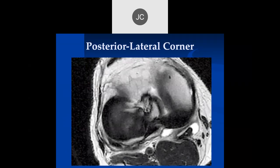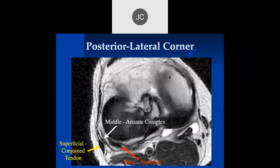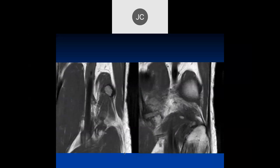Looking at the posterolateral corner, like many structures around joints, there are typically three layers: a deep layer which is the actual capsule, a middle layer containing the popliteus tendon and the arcuate complex, and a more superficial area — in this case the conjoined tendon. You look for these different layers with nice sharp soft tissue planes. If you see nice sharp soft tissue planes in the setting of an acute injury, then you're not dealing with a significant posterolateral corner injury, because once you get a significant injury, the anatomic detail is obliterated by edema and hemorrhage.